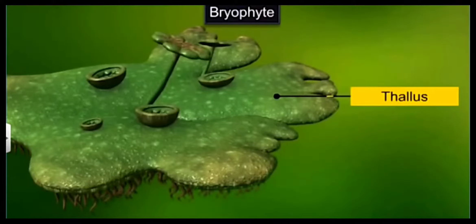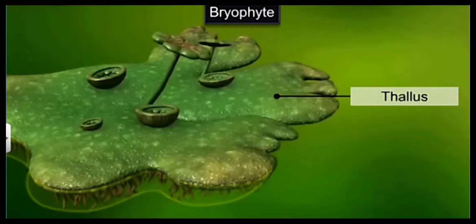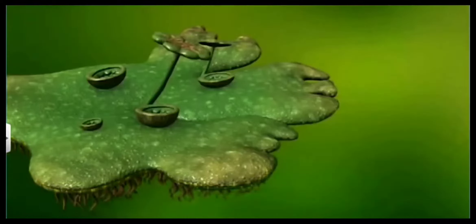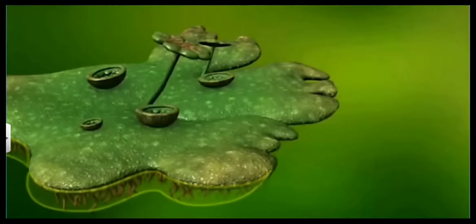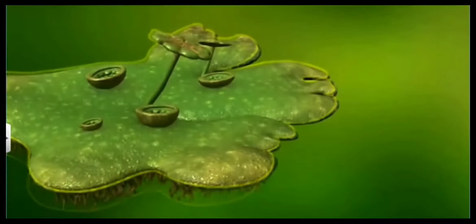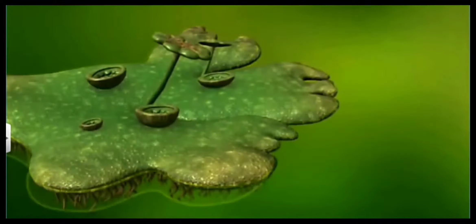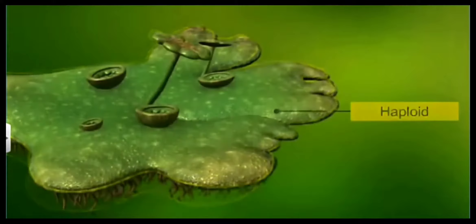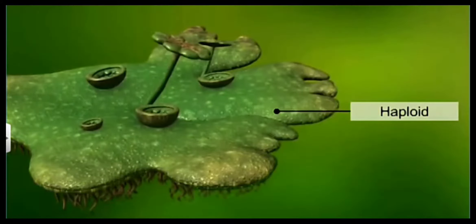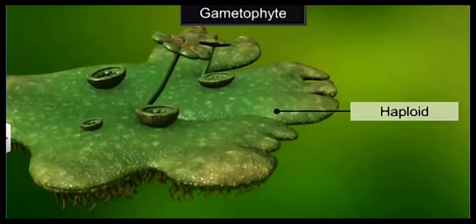Bryophytes have a thallus where there are no true roots, leaves, and stem. There are root-like structures called rhizoids, which may be unicellular or multicellular. They have a thallus which is haploid and it acts as a gametophyte because it produces gametes.